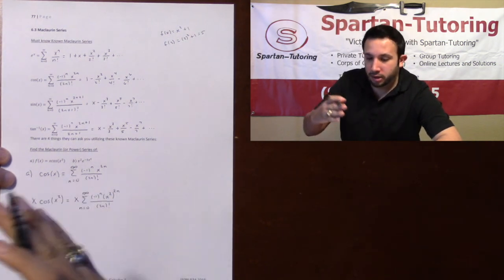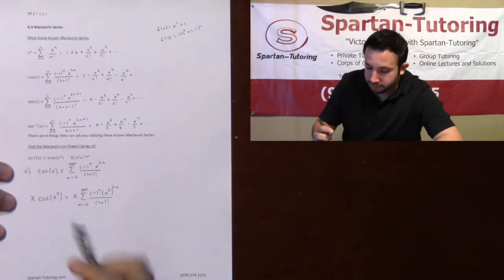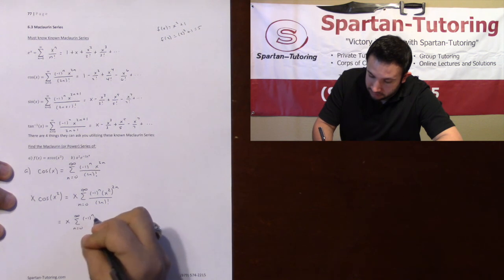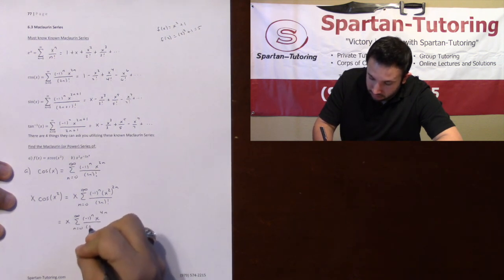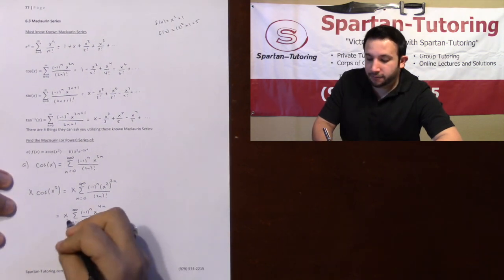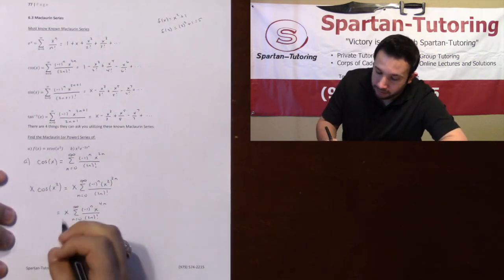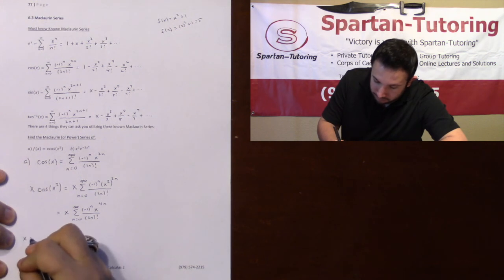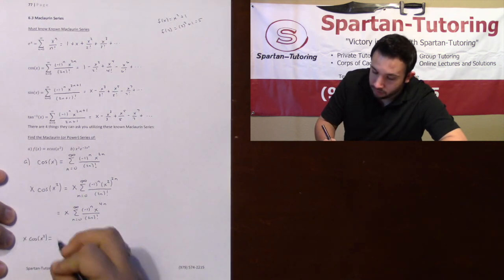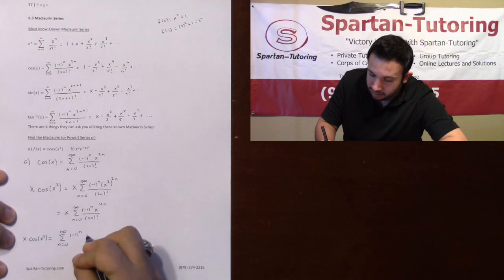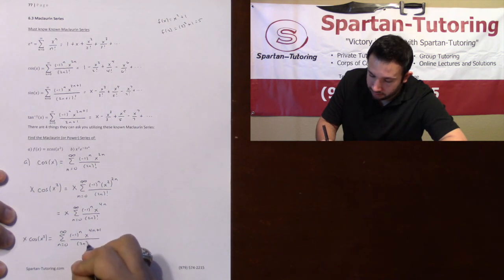Anyways, let's go ahead and distribute this X squared of the 2N. When you have an exponent raised to an exponent, you multiply. So this will be X times the sum from 0 to infinity of negative 1 to the N, X to the 4N over 2N factorial. And then finally, multiplying that X into there, when you multiply common bases, you add the exponents. And so your final answer for part A, your X cosine of X squared is going to be the sum from 0 to infinity of negative 1 to the N, X to the 4N plus 1 over 2N factorial.